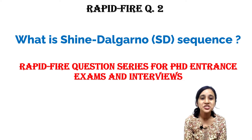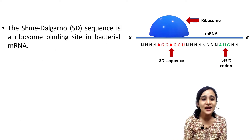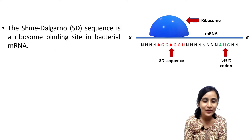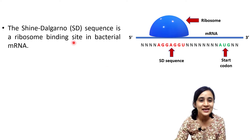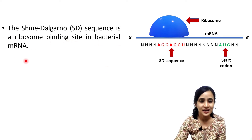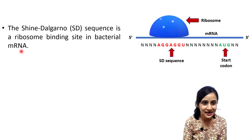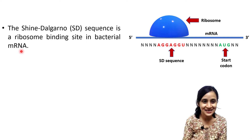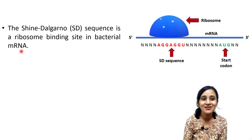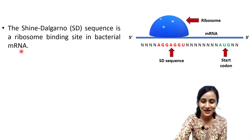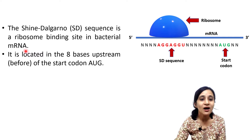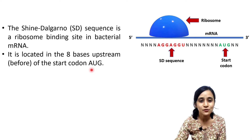Today's question is: what is the Shine-Dalgarno sequence, or SD sequence? The Shine-Dalgarno sequence is a ribosome binding site found in bacterial mRNA. Please remember that this sequence is only present in bacterial mRNA — it is absent in eukaryotic mRNA. It is located eight bases upstream, meaning before, the start codon AUG.